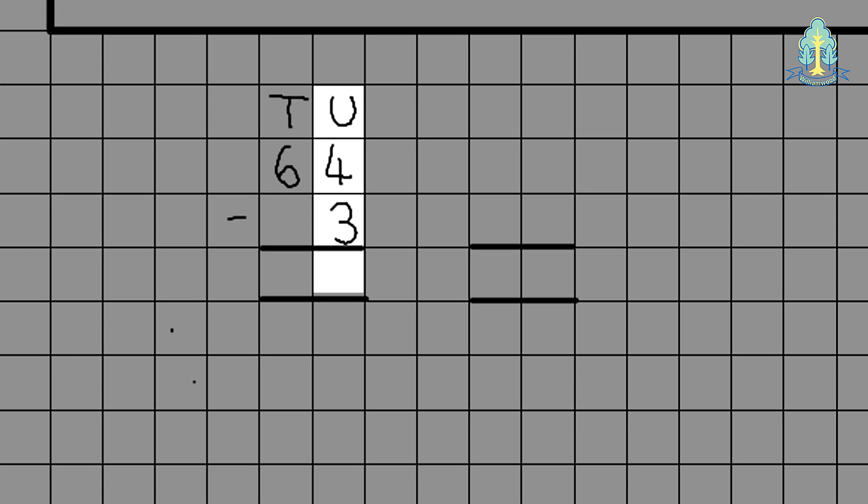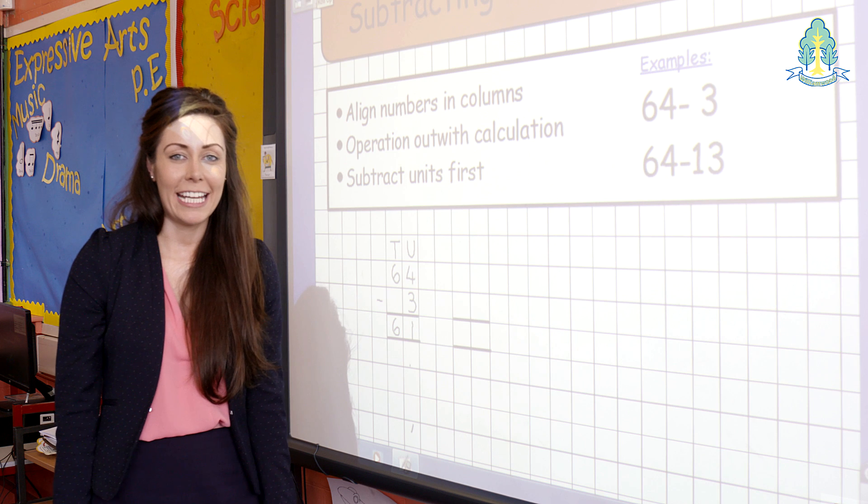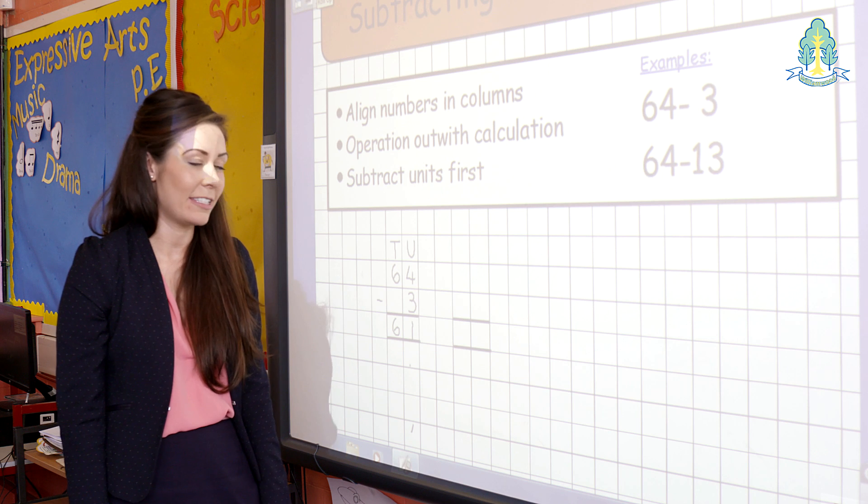They then begin to subtract at the units. 4 take away 3 is 1 and as nothing is being subtracted from the 6 it remains 6, giving the answer 61.